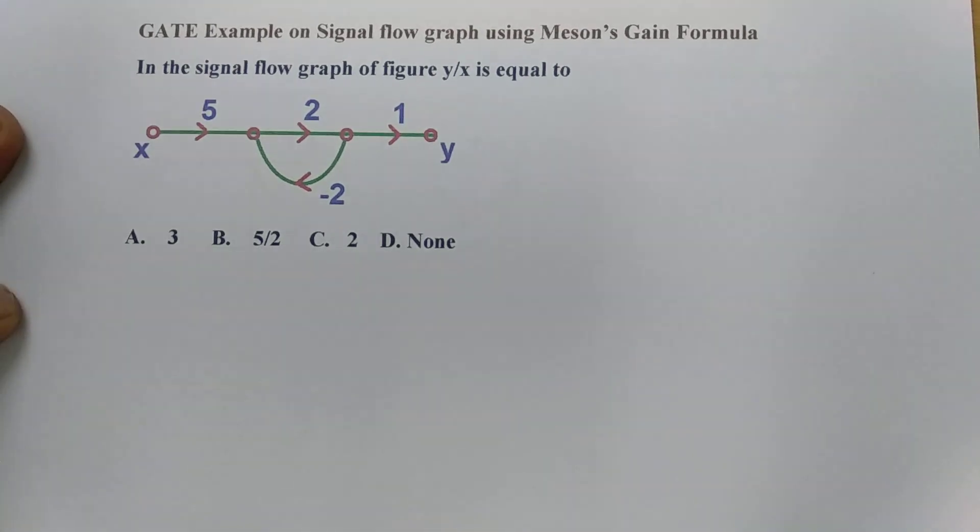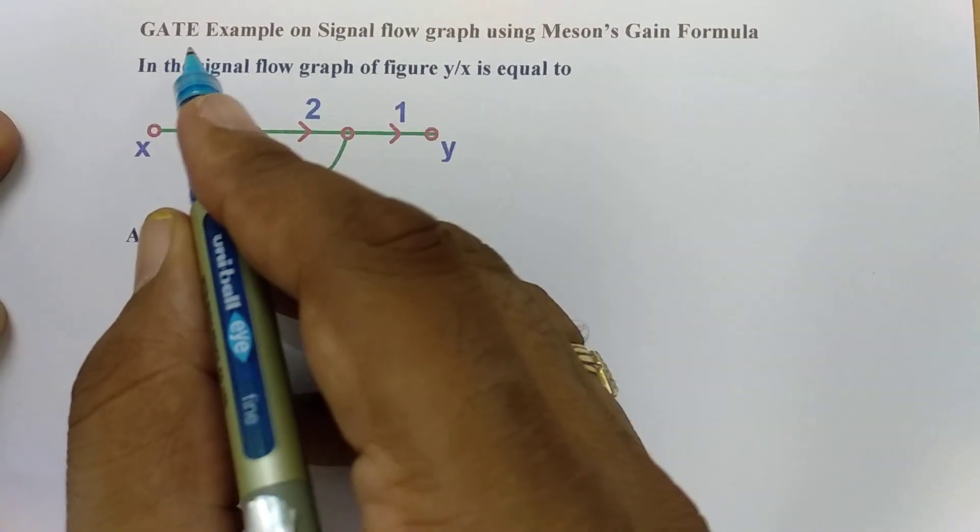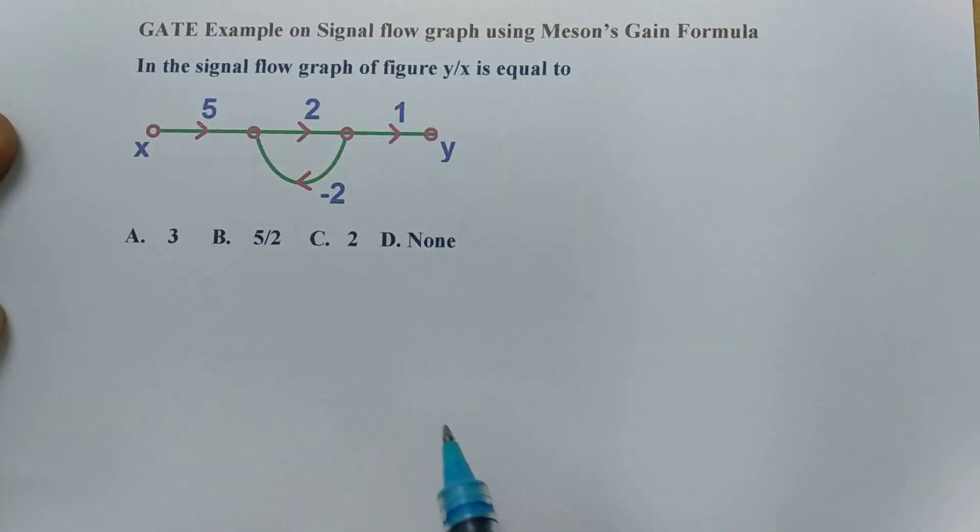Welcome to control engineering playlist. Here in this session, I'll be solving one GATE example on signal flow graph using Mason's gain formula.